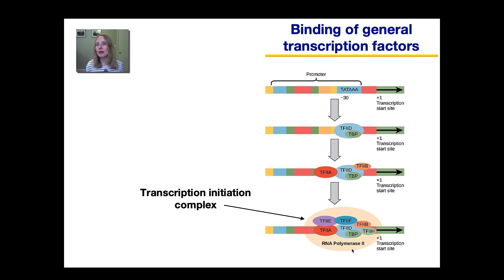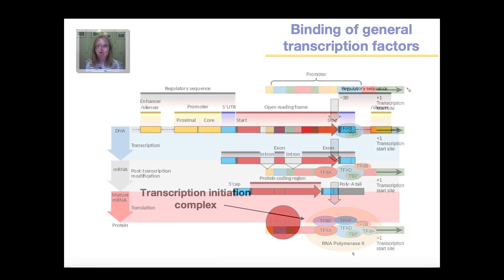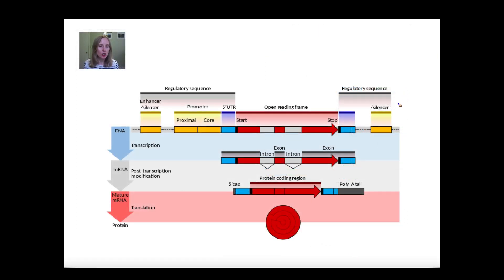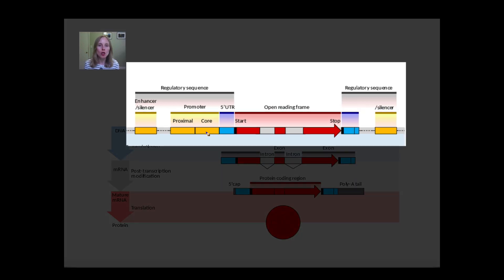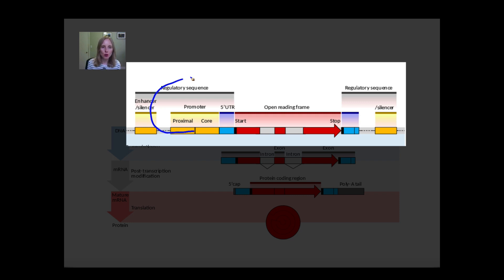Before I show you how the specific transcription factors bind, let's look again at the structure of a eukaryotic gene. The general transcription factors bind here at the promoter, right at the beginning of the gene. But specific transcription factors often bind at enhancers that can be pretty far from the beginning of the gene — this region of DNA can be fairly long. So how do specific transcription factors binding far from RNA polymerase activate it? The DNA forms an interesting loop, bringing the enhancer to a location where the proteins can interact.